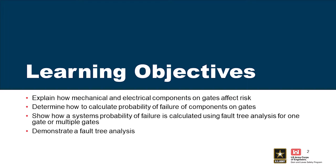The first one is to explain how mechanical and electrical components on gates affect risk. And then we're going to determine how to calculate probability of failure of components on gates and show how a system's probability of failure is calculated using fault tree analysis for one gate or multiple gates.